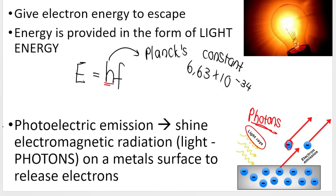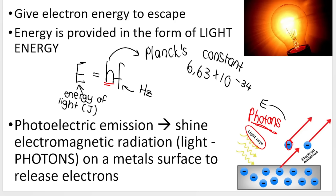Energy is provided in the form of light. The light has a particular frequency measured in hertz, allowing us to calculate the energy of the light measured in joules. When these light rays containing photons with a particular energy hit the surface of the metal, the energy is transferred to the electron, giving the electron enough energy to escape the metal surface.